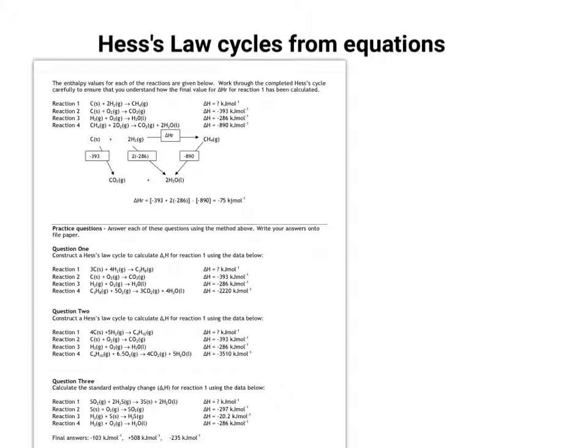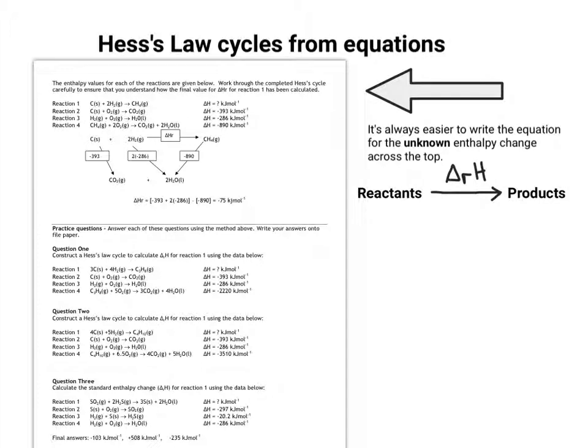So let's start with the one at the top. It gives you the enthalpy values for a set of reactions. Apart from one of them, reaction 1, that's the one you have to calculate. So this now represents the enthalpy change that you're trying to calculate.